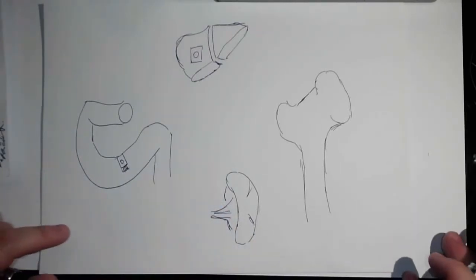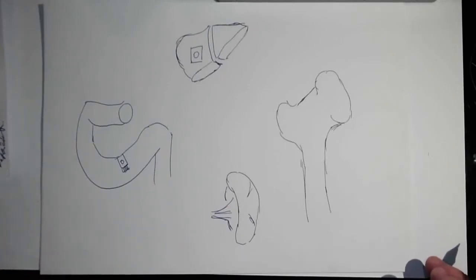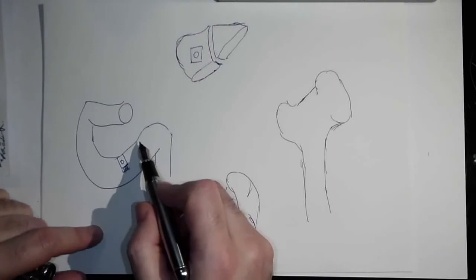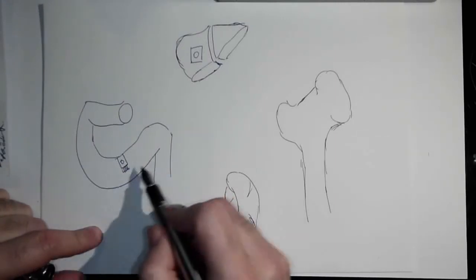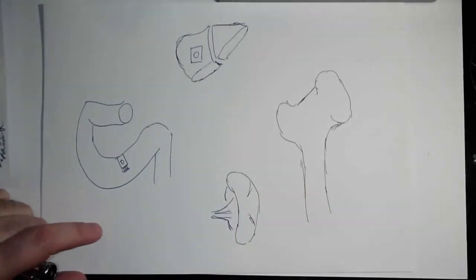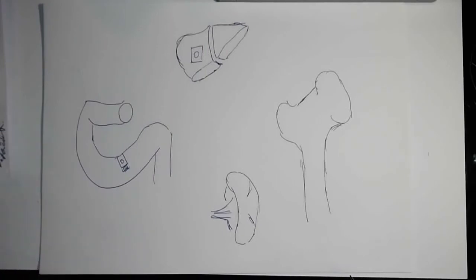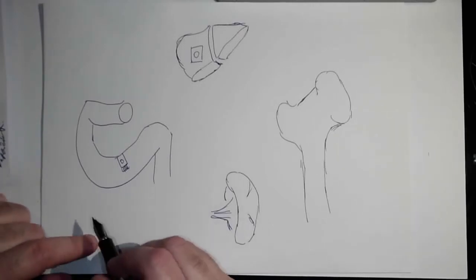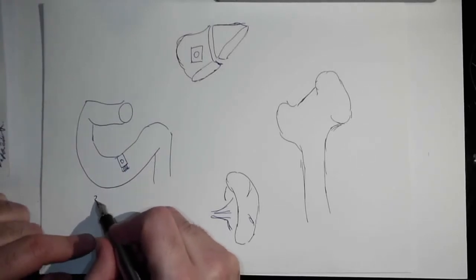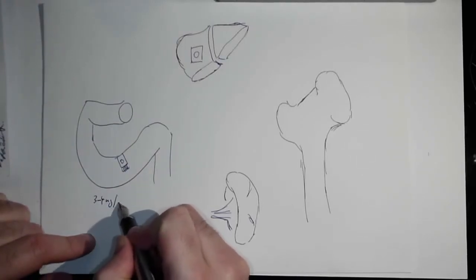The point where iron is absorbed is the enterocyte in the duodenum and the proximal part of jejunum. The average or maximum rate at which the duodenum is able to absorb iron is like three to four milligrams per day.